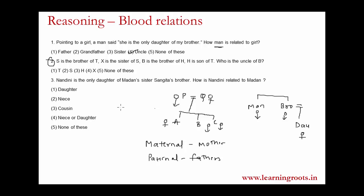Now going to the third question: Nandini is the only daughter of mother's sister Sangeeta's brother. We start with the center point. Mother's sister Sangeeta is present, so I represent mother as M. Now Sangeeta has a brother, but we cannot say that this brother must be the mother or someone else. There could be two cases: Sangeeta could have another brother, or that brother could be the mother's brother. In one case there is another person who is the brother of Sangeeta; in the second case, Madan is the brother of Sangeeta.